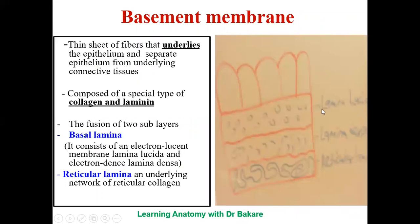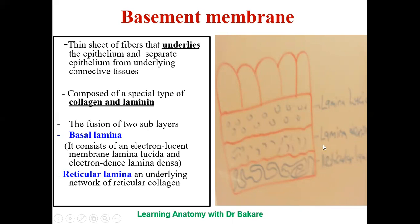The basement membrane is like a strong platform onto which the epithelium is lined. The epithelium is not just lining interiors of cavities but is first lined onto the basement membrane before forming this alignment, making the basement membrane a structural support. It is made up of three distinct layers: the lamina lucida, the lamina densa, and the reticular lamina, which form the structural components of the basement membrane.